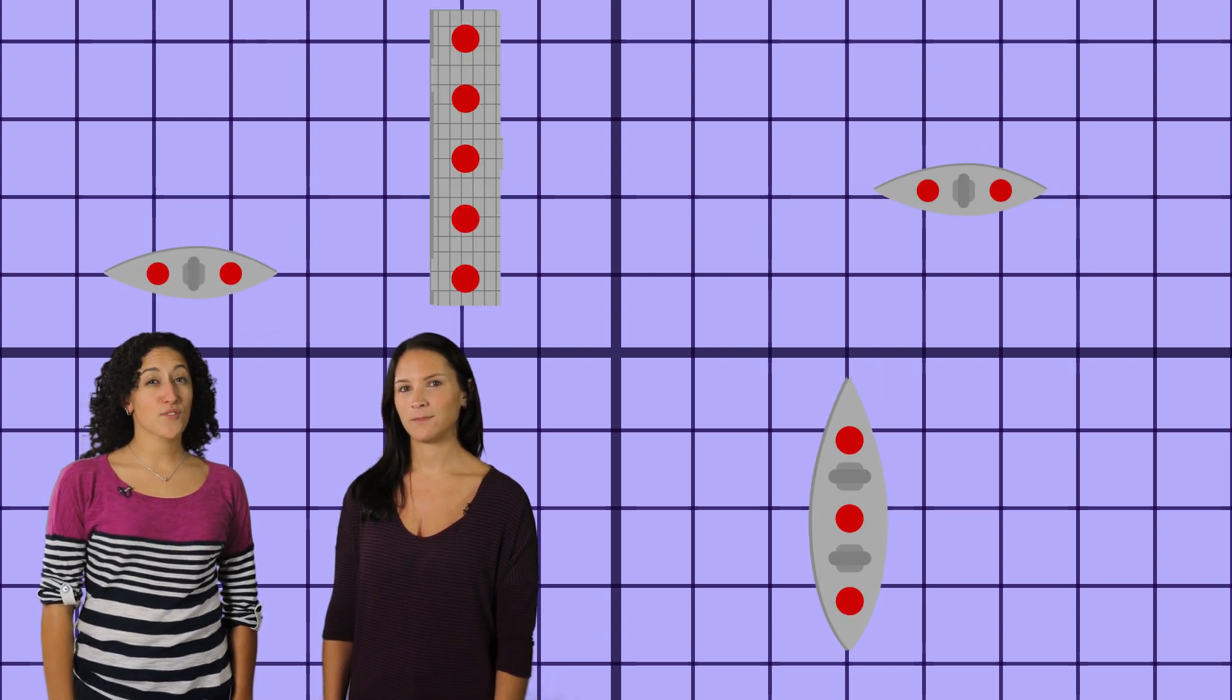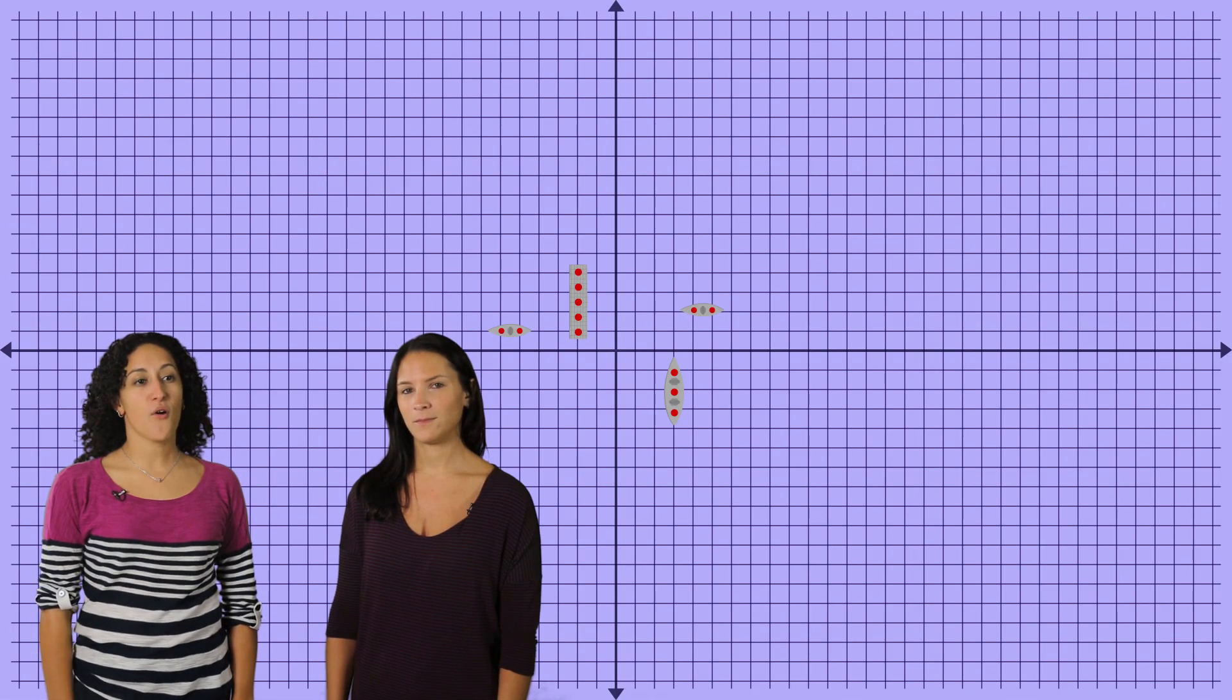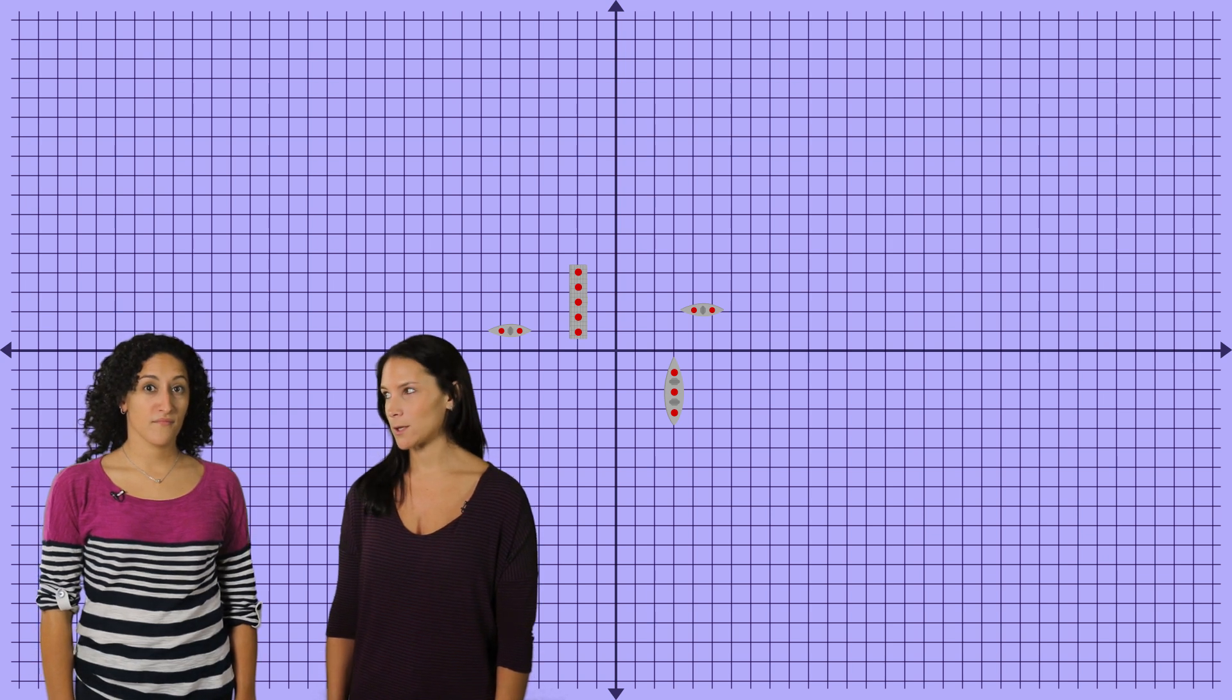Welcome to the coordinate plane. It's a little bit like a battleship board, except the coordinate plane goes on infinitely in all directions. And there's no threat of your ship being sunk.